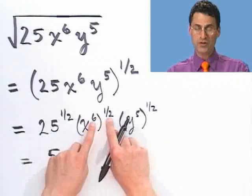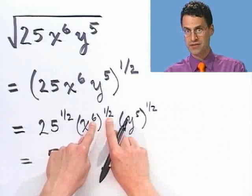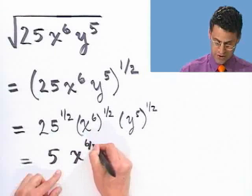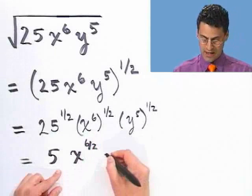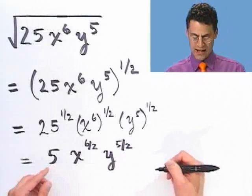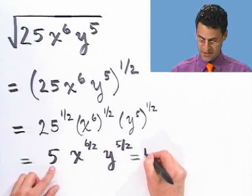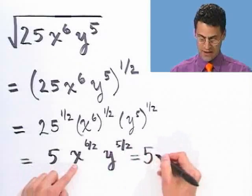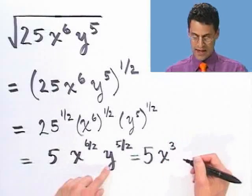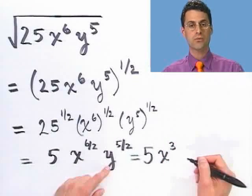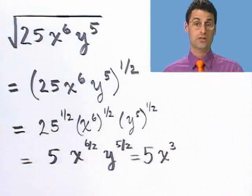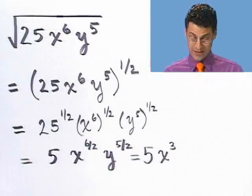So I take 6 and multiply by one-half, giving x to the six over two, and y to the five over two. Simplifying: x to the six over two is x cubed, and I keep y to the five halves. The result so far is 5x³ times y to the five halves.